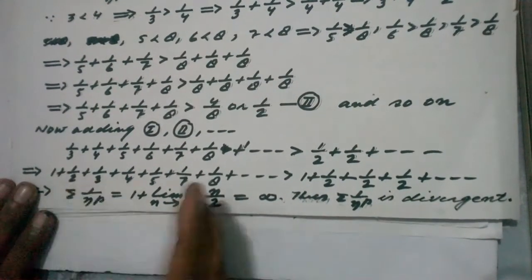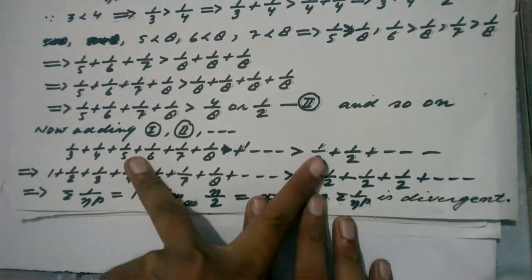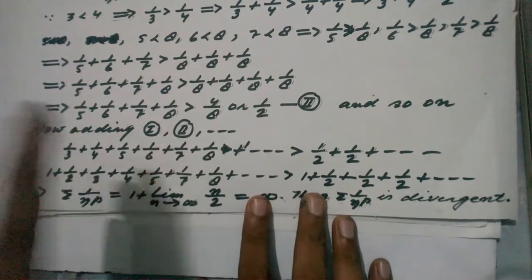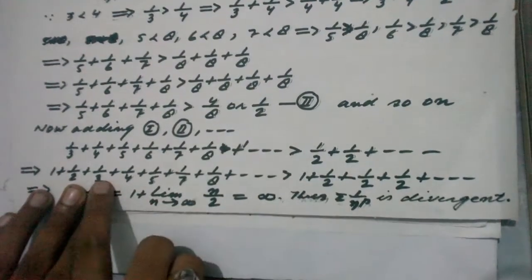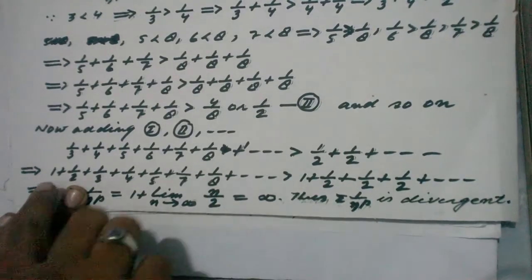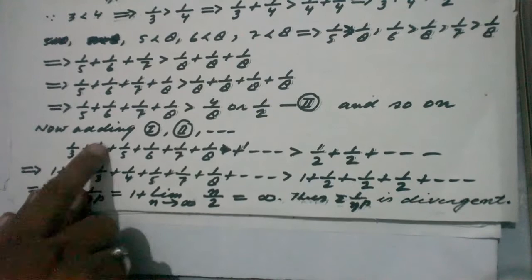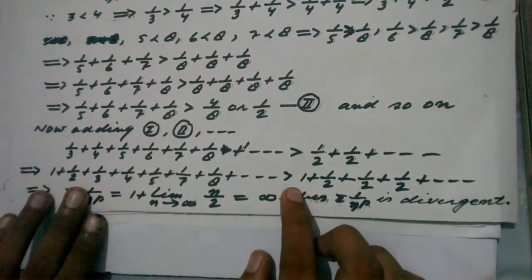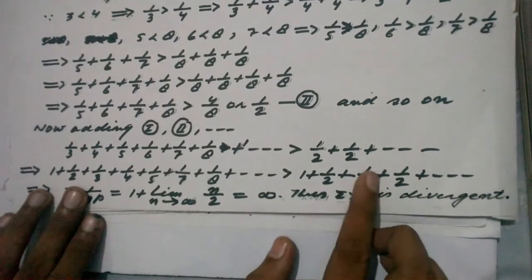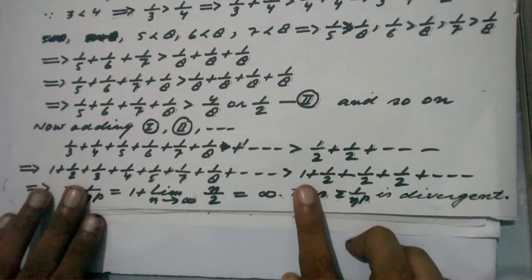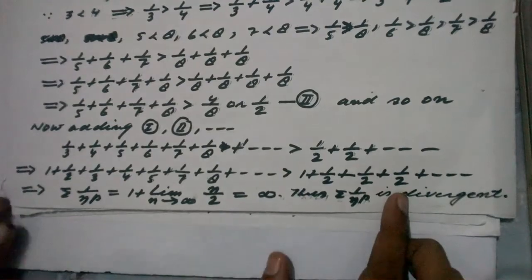Now adding 1 and 1/2 on both sides of this inequality, the left side becomes 1 + 1/2 + 1/3 + 1/4 + ... = sigma 1/n, and the right side becomes 1 + 1/2 + 1/2 + 1/2 + ... to infinity.